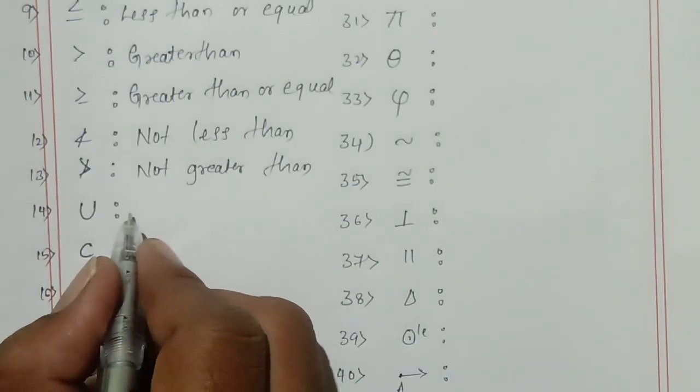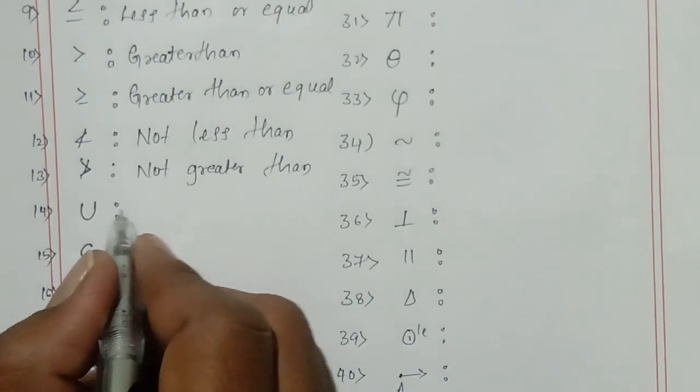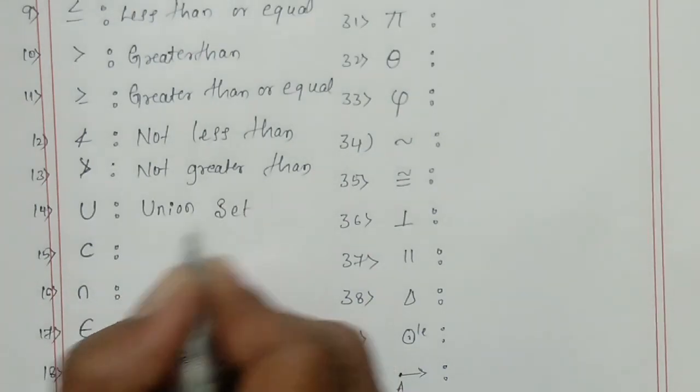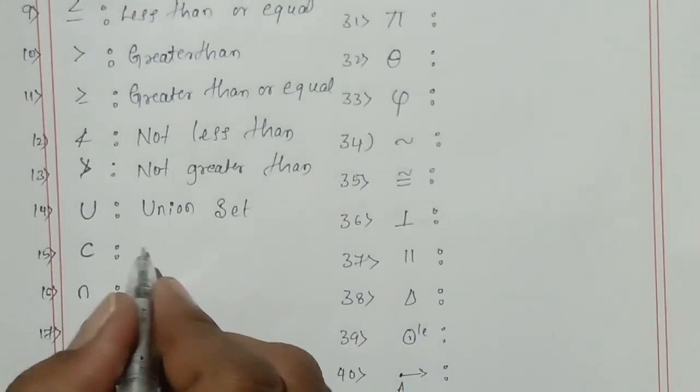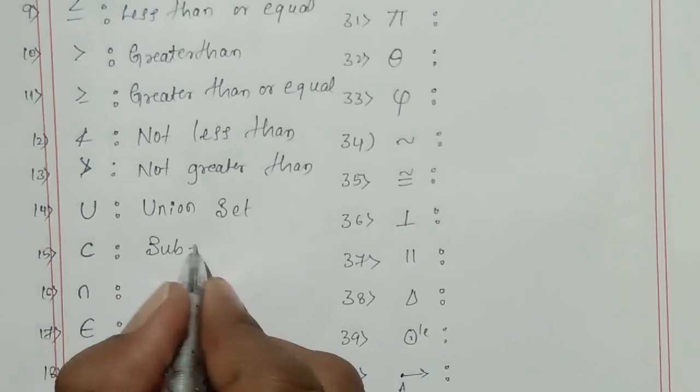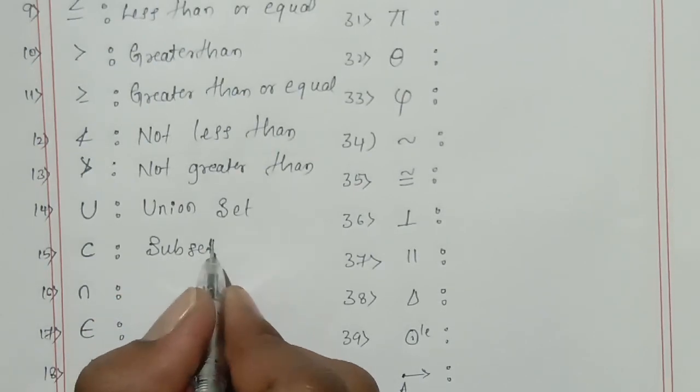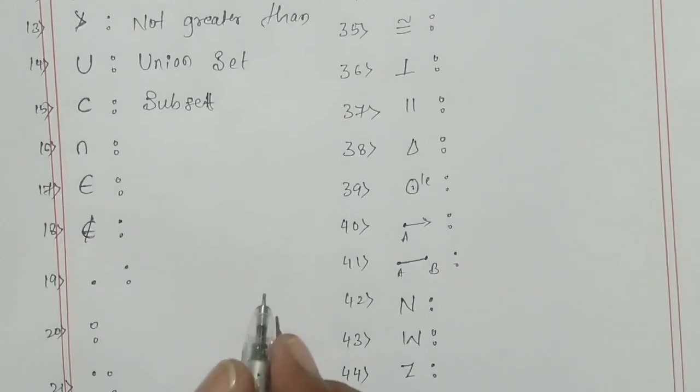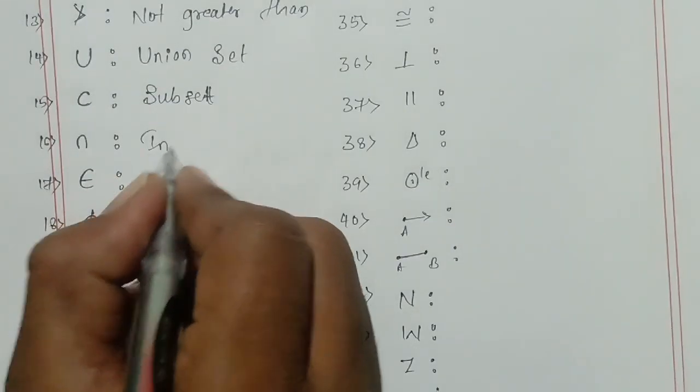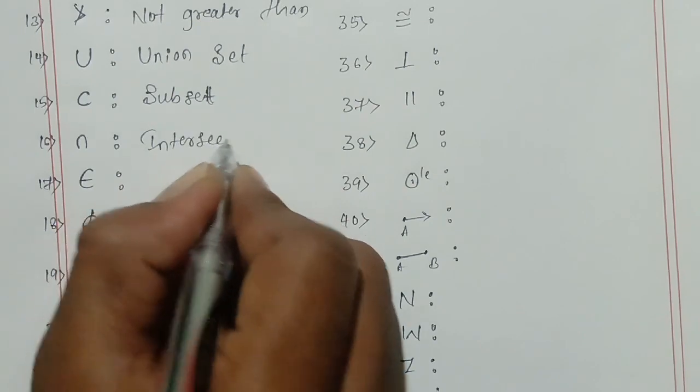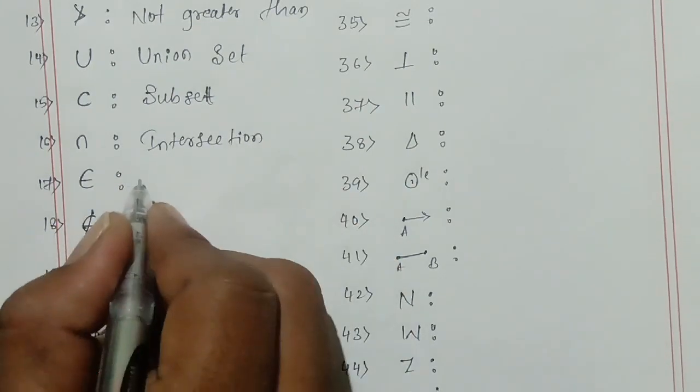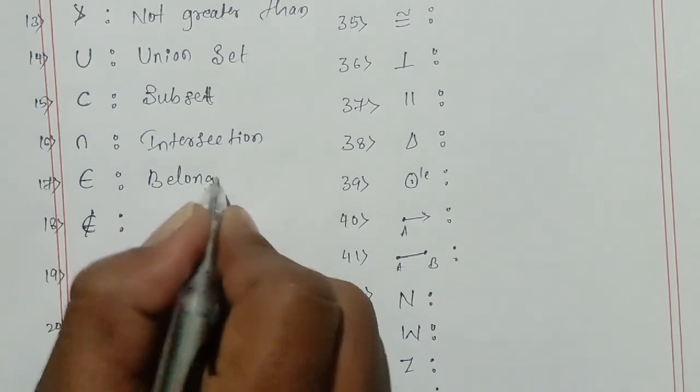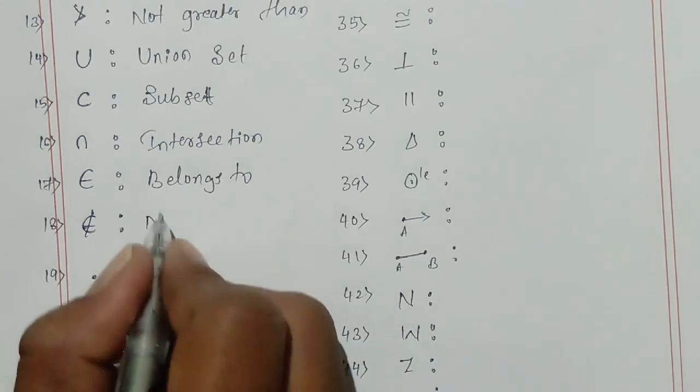This is union set. This is subset. This is intersection. This is belongs to. Not belongs to.